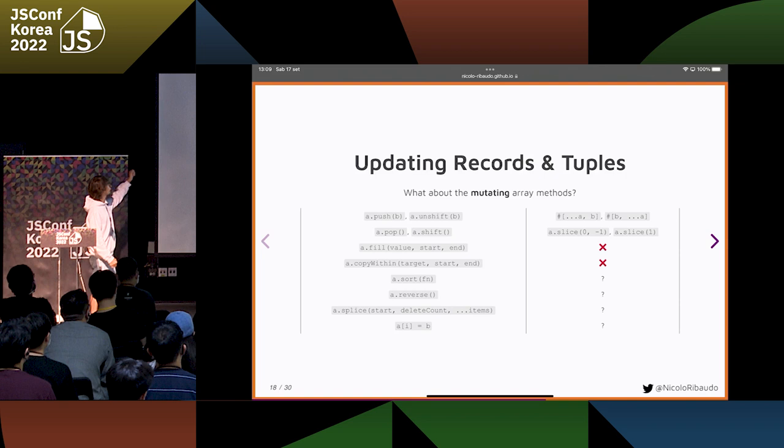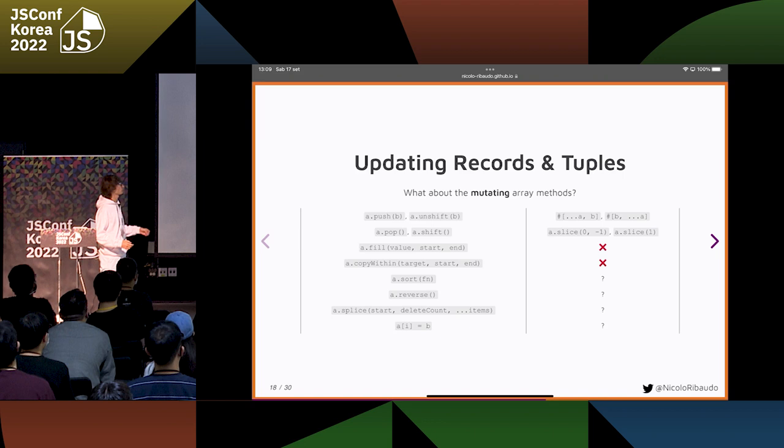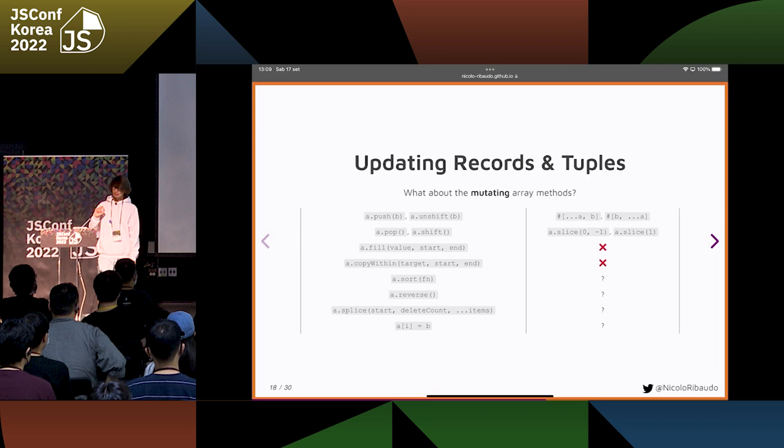Then we have Array.fill and Array.copyWithin. Those methods are really specialized for mutating things, and it does not make sense to have an immutable version of them because they're used for performance-critical things where you need to do as few operations as possible. This is just not possible with tuples, so they're not supported.